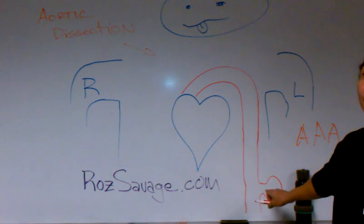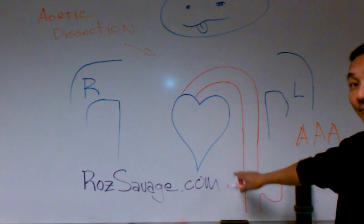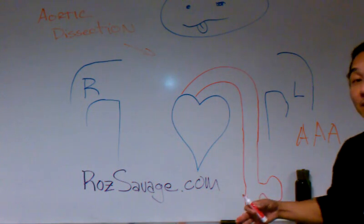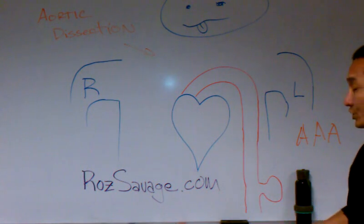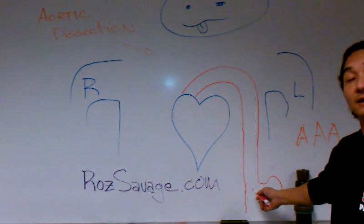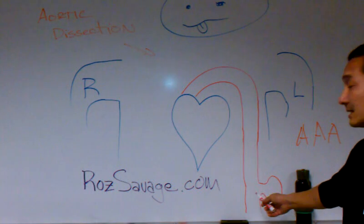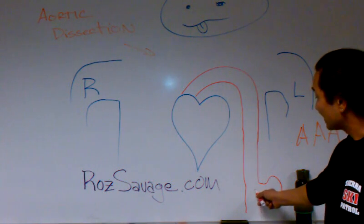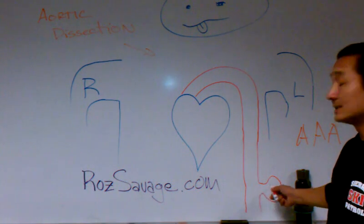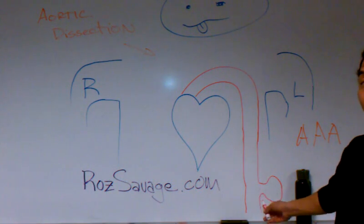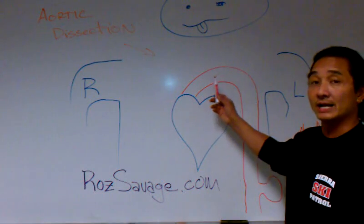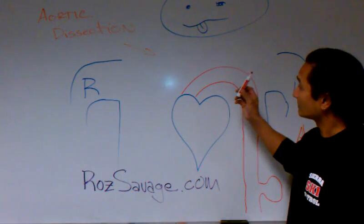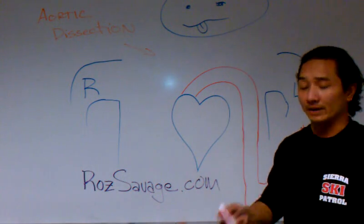It's three-dimensional — it could balloon out backwards, forwards, circumferential, or it could balloon out to one of the sides. So that's why an aneurysm happens in the abdomen, and a dissection happens in the aorta.